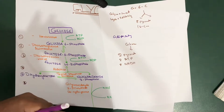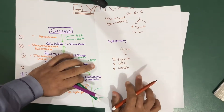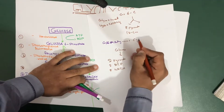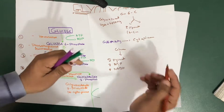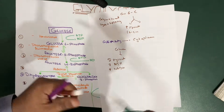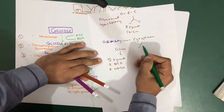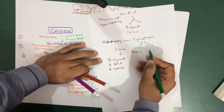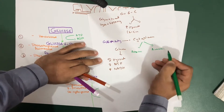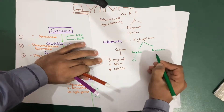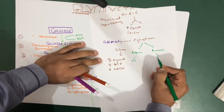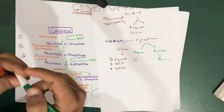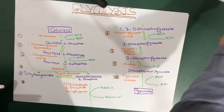One important thing to remember: glycolysis occurs in the cytoplasm — that is a major point for MCQs. There are also two types of glycolysis: aerobic, which uses oxygen, and anaerobic, which does not use oxygen.